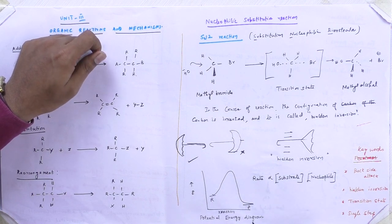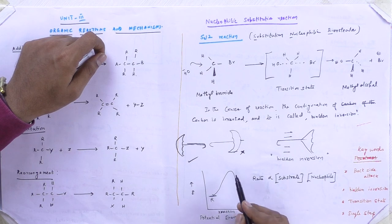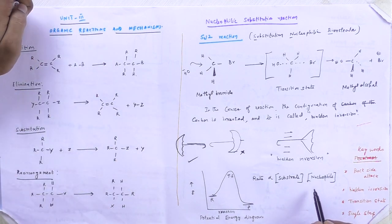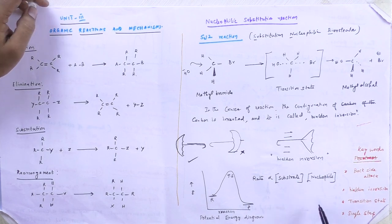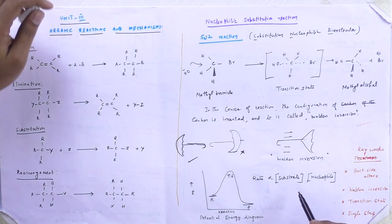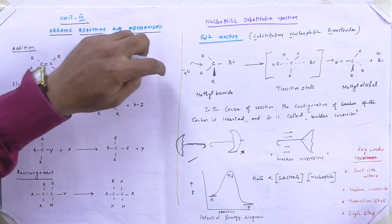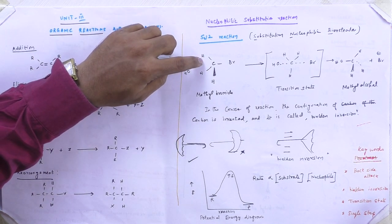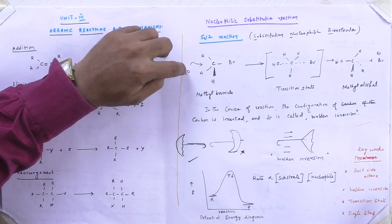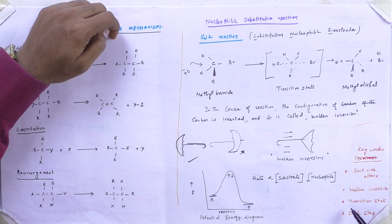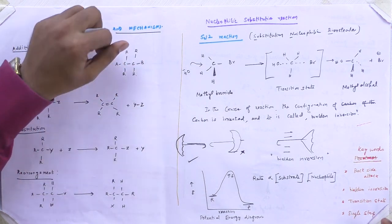This is the potential energy diagram. R is the reactant and P is the product, with a transition state in between. The rate of the reaction depends on the concentration of both the substrate and the nucleophile; hence it is a second-order reaction, making it bimolecular — Substitution Nucleophilic Bimolecular. Key features: the reaction proceeds through a backside attack by the nucleophile, resulting in Walden inversion, through a single transition state, and it is a single-step process.